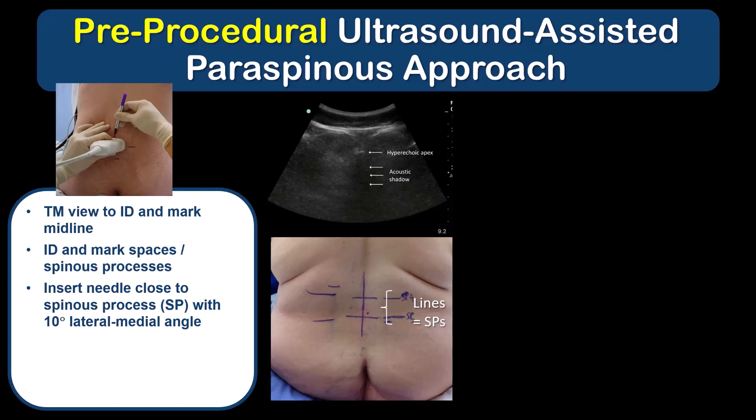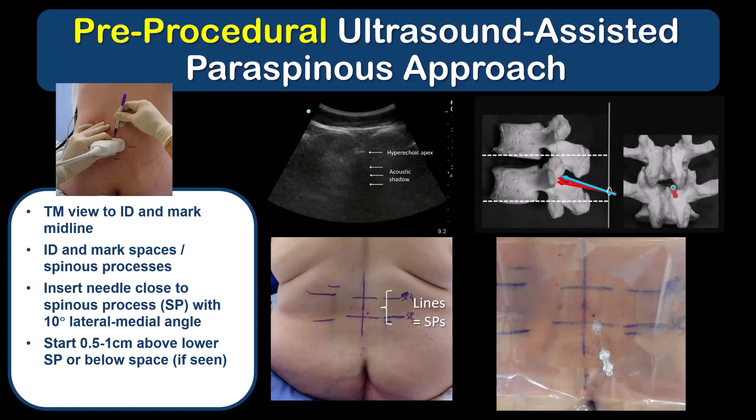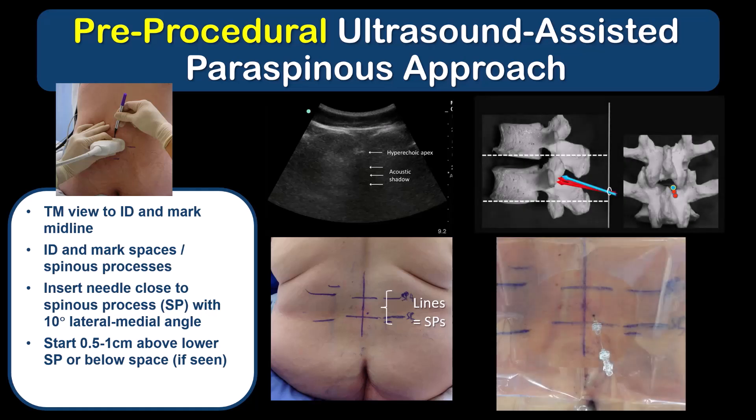Or, if I haven't been able to see the space, then I mark it cranial to the line marking the lower spinous process, as illustrated here. I then insert the needle at a lateral to medial angle of about 10 degrees as discussed. I often start at a 5 to 10 degree cranial angle, but you could also choose to start with no cranial angulation, in which case you will inevitably land on lamina, and you can then creep up and into the space with redirections.